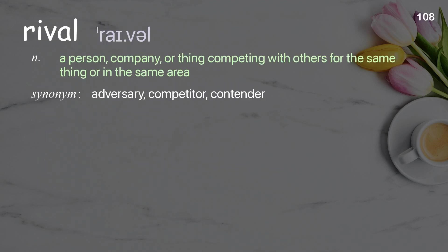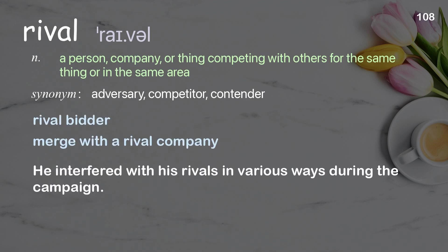Rival — a person, company, or thing competing with others for the same thing or in the same area. Examples: rival bidder, merge with a rival company. He interfered with his rivals in various ways during the campaign.